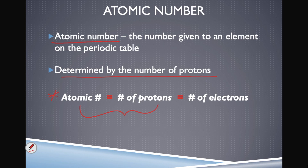Because atoms are electrically neutral — they have no overall charge — the number of protons with a positive charge must equal the number of electrons with a negative charge. Positive and negative charges must equal each other to cancel out, giving us what we call a neutral atom.